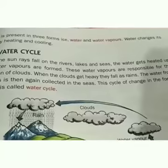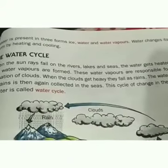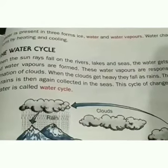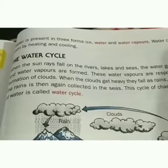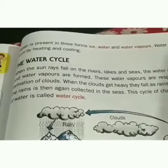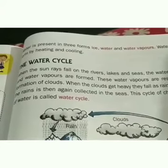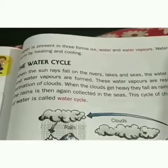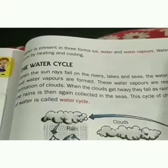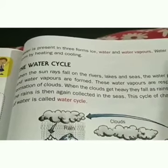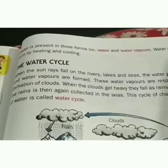Solid water means ice — we get ice from the refrigerator. When water freezes, it transforms into ice. Liquid water is the wet form we are most familiar with, because we use it in our daily life for washing, drinking, and many other ways. Water vapor is the gaseous form of water present in the air — when we heat some water, we can see gaseous vapor coming out.